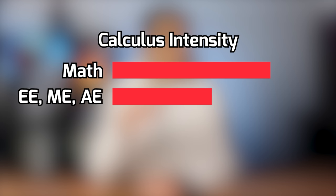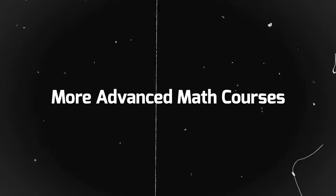All the math classes mentioned so far are ones that all engineering students have to take. However, math majors will obviously have the most calculus courses, followed by electrical, mechanical, and aerospace engineers, then computer engineers, then software engineers. We can now look at more advanced math courses that not everyone has to take — whether you need them depends on your engineering major and university.